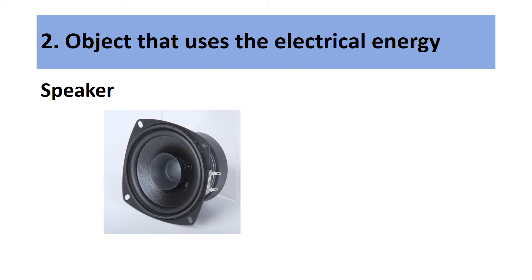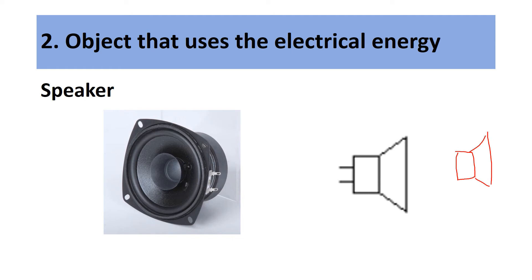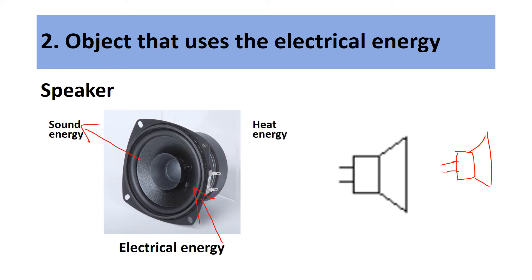Our final component in this group is a speaker. To draw the symbol, you draw a box with the speaker shape coming out, and then two wires to connect at the end. For the speaker, electrical energy enters and is transformed into sound energy, and some of it is wasted as heat energy.